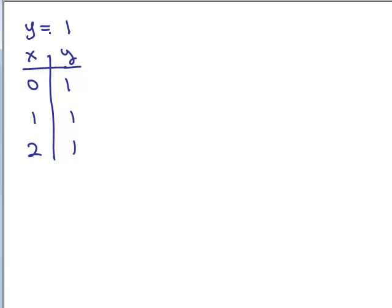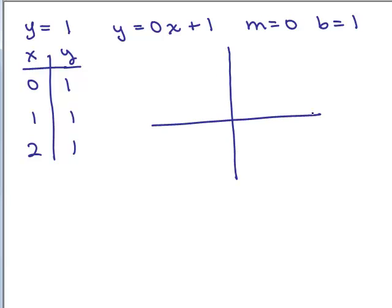But since this has a y in it, you can solve for y. In fact, it's already solved for y. You could think of it as 0x plus 1, y equals 0x plus 1. So the slope is 0 and b is 1. You could use the slope intercept method on this line, and you could state the slope and the y-intercept. So no matter how you look at it, you will get the same graph of the line. But in this case, you can state the slope and the y-intercept.